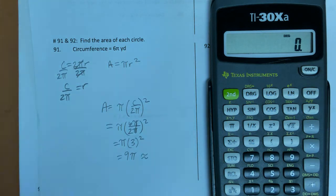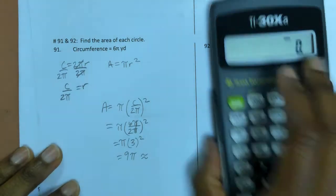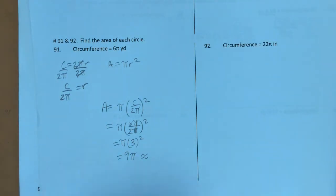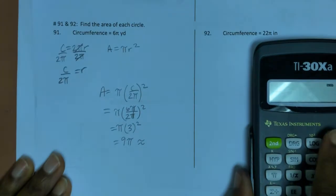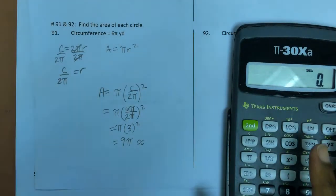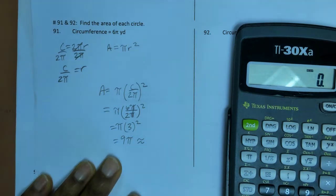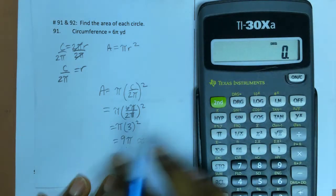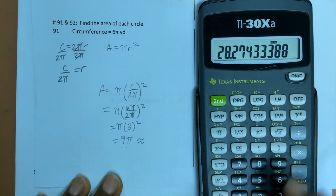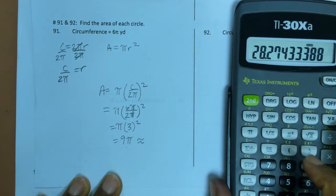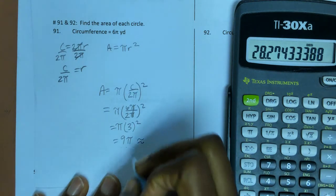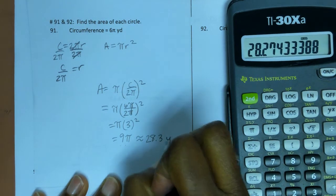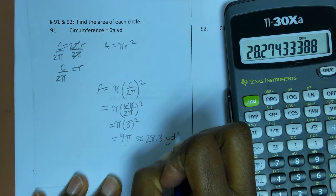Sorry — I didn't pause the video and someone came in during my planning period. You can fast forward through that part. Picking back up: 9 × π is about 28.3 yards squared for the area.